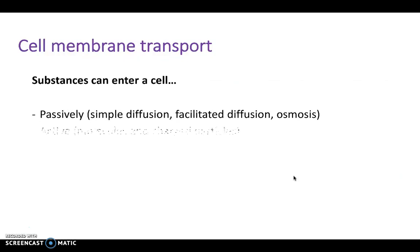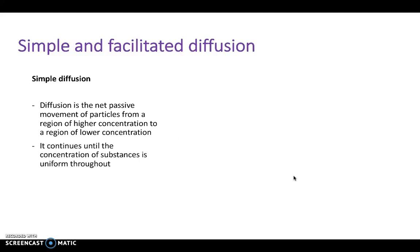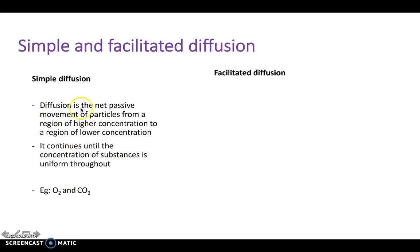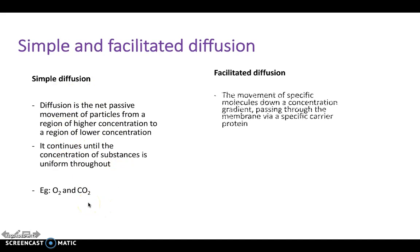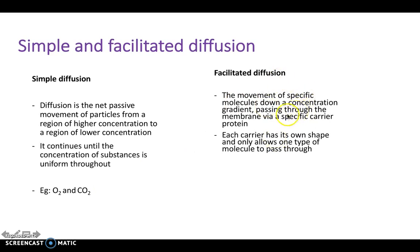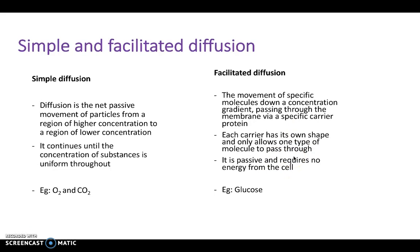Substances can enter a cell either passively — via simple diffusion, facilitated diffusion, or osmosis — or actively, for molecules and charged particles. Simple diffusion is the net passive movement of particles from a region of higher concentration to a region of lower concentration, continuing until the concentration is the same on both sides of the membrane. For example, O2 and CO2 move in this way. Facilitated diffusion is the movement of specific molecules down the concentration gradient, passing through the membrane via a specific carrier protein. Each carrier has its own shape and allows only one type of molecule to pass through — it's passive and requires no energy. For example, glucose moves in this way.